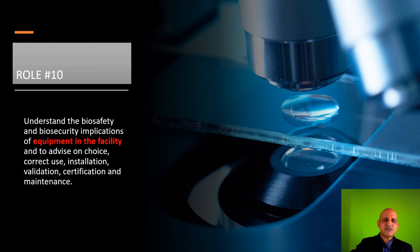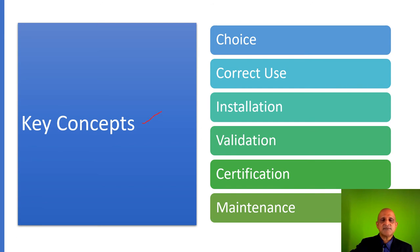The tenth role of a biosafety officer is understanding equipment. In the laboratory we have multiple sets of equipment including biological safety cabinets, centrifuges, autoclaves, and others. As a biosafety officer, you must be aware of the operation of all this equipment so that you can train others with respect to their usage. The key concepts with regard to instrumentation are the choice of instrument, the correct use, applying the appropriate administrative control in the form of an SOP, the installation of the equipment, validation, certification and maintenance. You must maintain files for each of these particular parameters with regard to instrumentation.